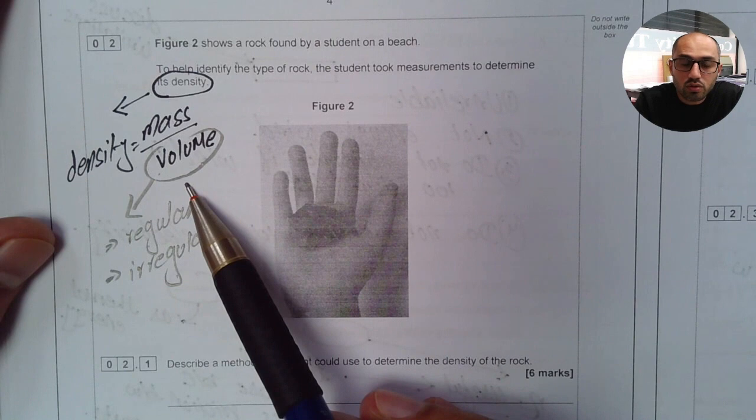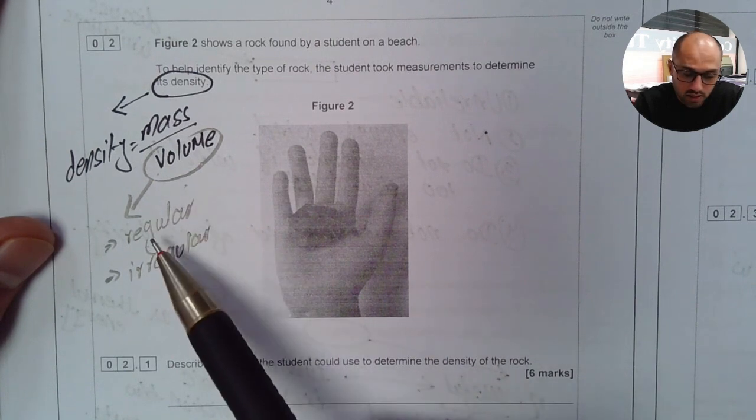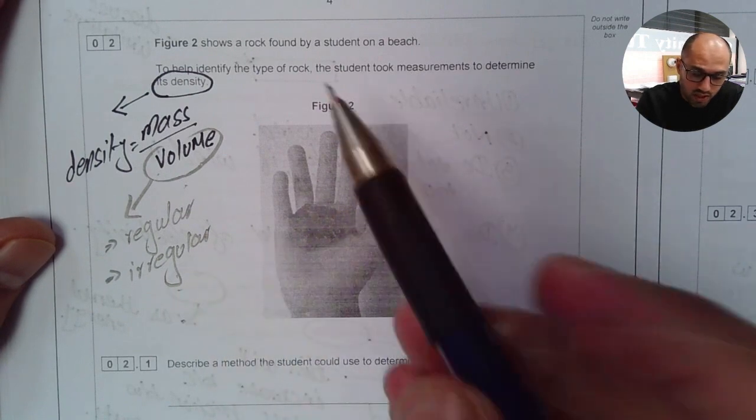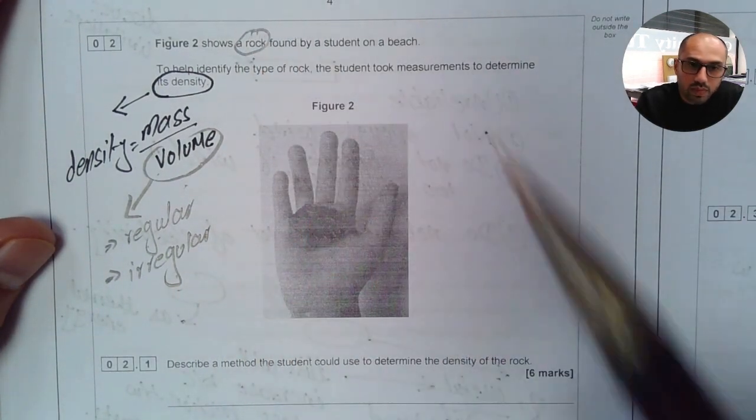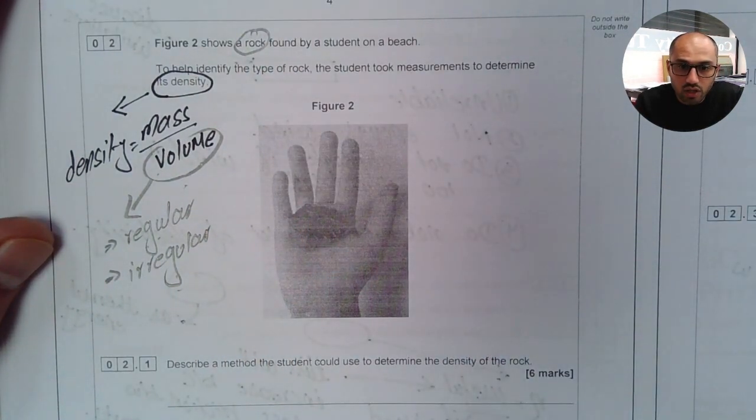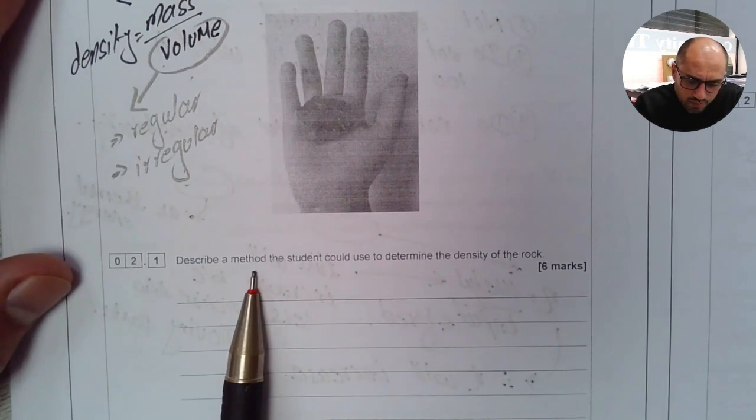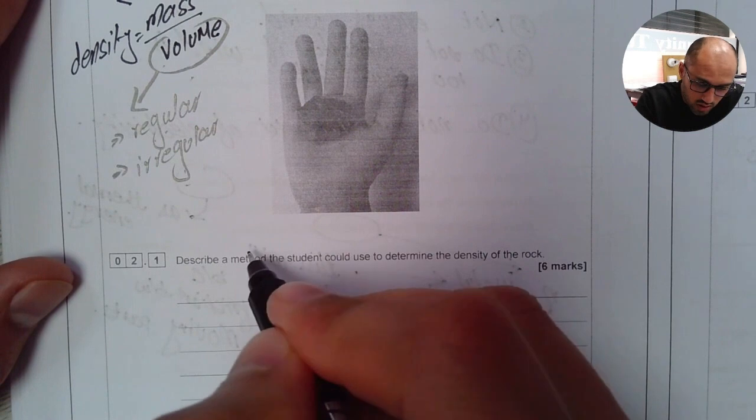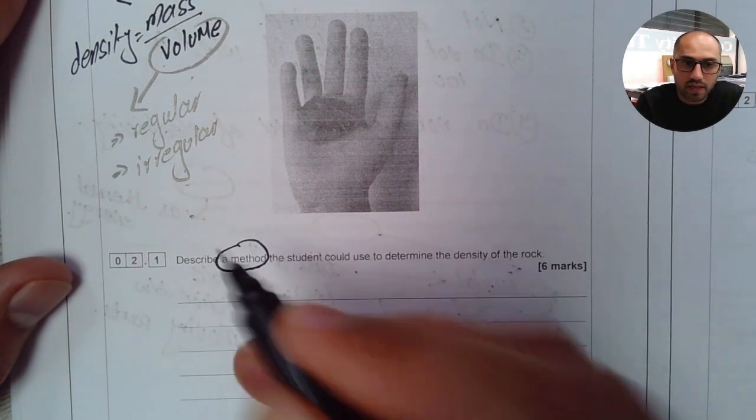When it comes to the volume, there are two types of solid objects: regularly shaped objects and irregularly shaped objects. In this case, it's a rock, so the rock will be an irregularly shaped object. It says, describe a method that students should use to determine the density of the rock. So we have to describe a method.